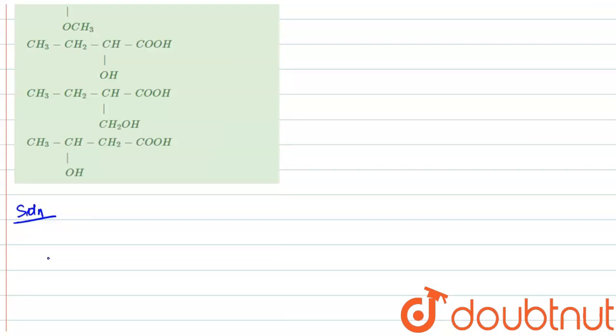So firstly understand what is optically active and optically inactive compound. If a compound contains a chiral carbon. So what is chiral carbon?